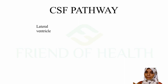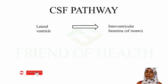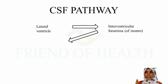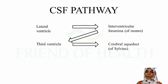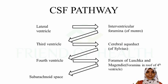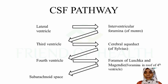CSF flows from the lateral ventricle through the interventricular foramen - also known as foramen of Monro - to the third ventricle. From the third ventricle, it moves through the cerebral aqueduct of Sylvius to the fourth ventricle, then to the subarachnoid space. The subarachnoid space is between the arachnoid matter and pia mater. The three layers of brain covering are dura mater, arachnoid matter, and pia mater - remember as DAP.